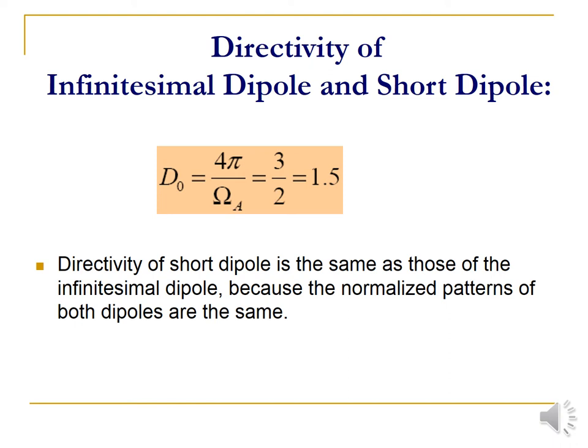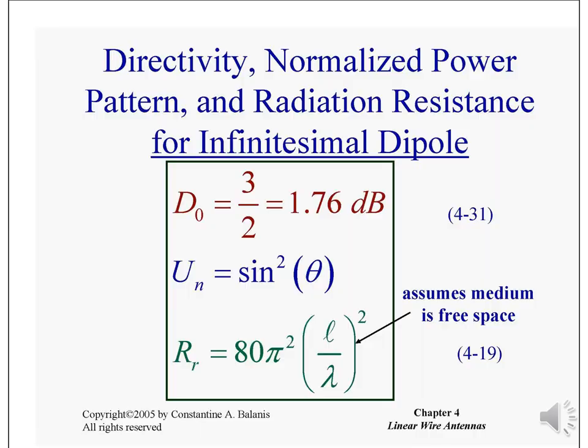Next we calculate the directivity of the infinitesimal dipole and short dipole. D_0 = 4pi / Omega_A = 3/2 = 1.5. The directivity of the short dipole is the same as that of the infinitesimal dipole because the normalized pattern of both dipoles is the same. So D_0, U_1, and R_r are the key parameters.